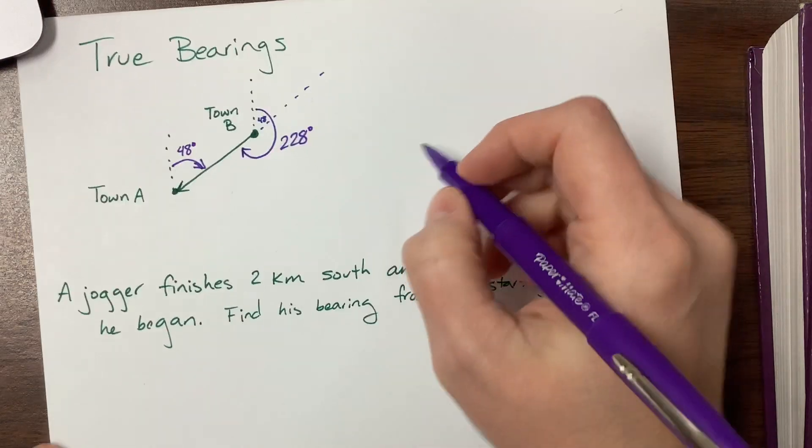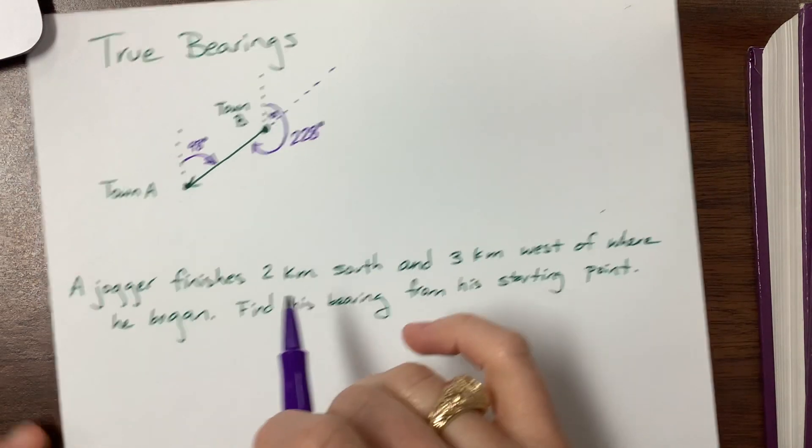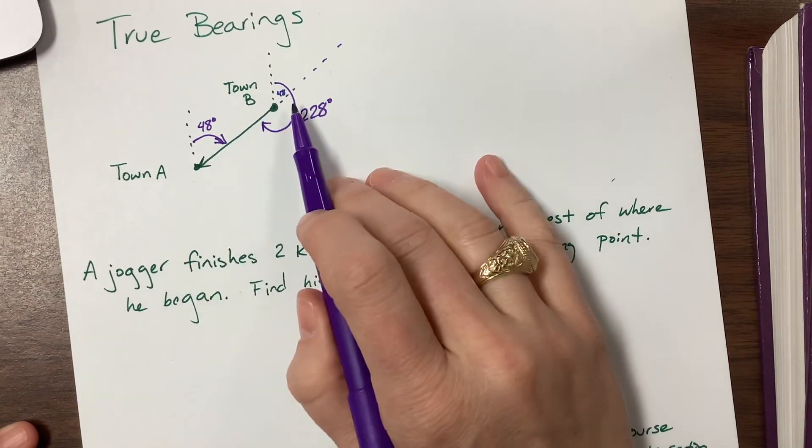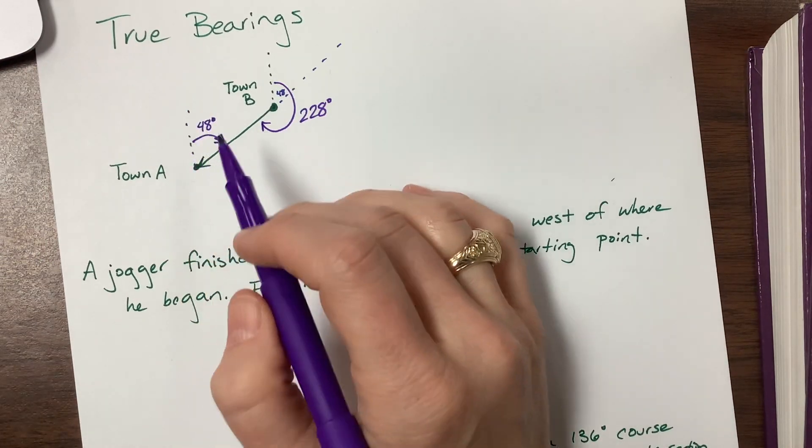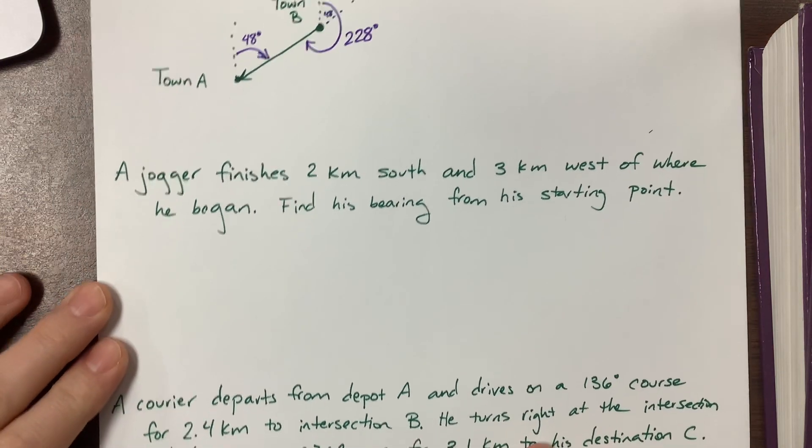So always when you have something there, you always want to draw the points, see what the picture looks like, figure out where's north. I would make the path that you're taking a solid line and the true north a dotted line so you can kind of see where that angle is. So let's look at this first example that the book gives us.